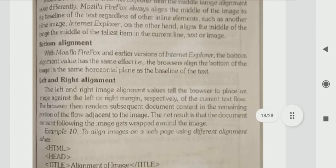Bottom alignment. Bottom alignment - what does it do? The alignment value has the same effect. The browser aligns the bottom of the image in the same horizontal plane as the baseline of the text.